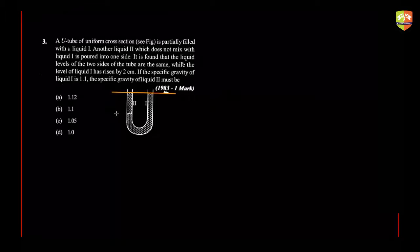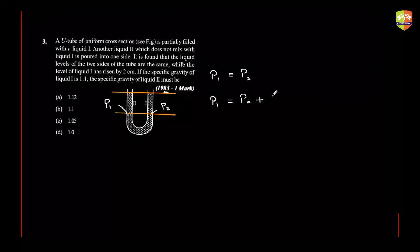Now let's say the second liquid is up till here, so from here I can draw a horizontal line. Since it is a horizontal line, pressure here is p1 and pressure here is p2. p1 has to be equal to p2. Now p1 is atmospheric pressure plus ρ of the second liquid times g times h, where this distance is h. And p2 is atmospheric pressure plus density of the first liquid times g times h.